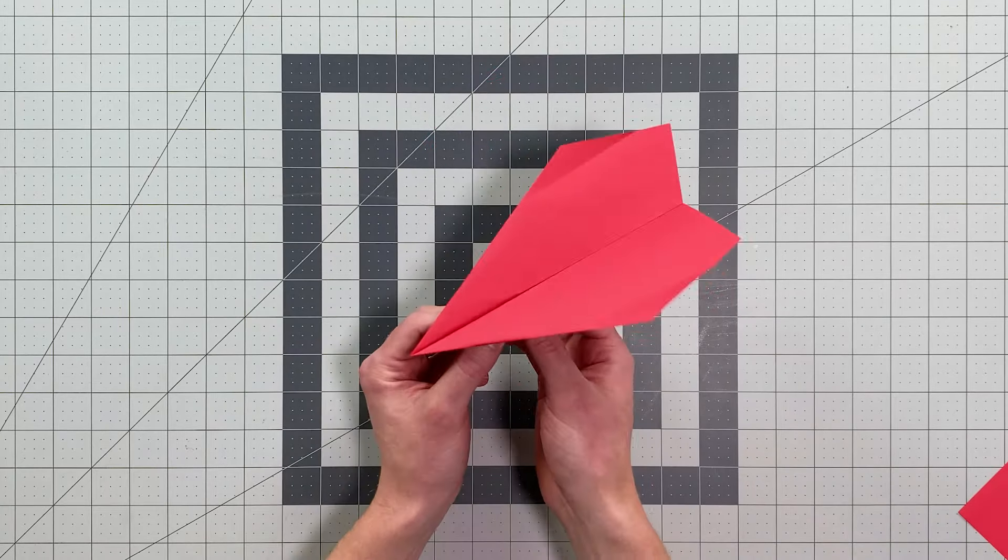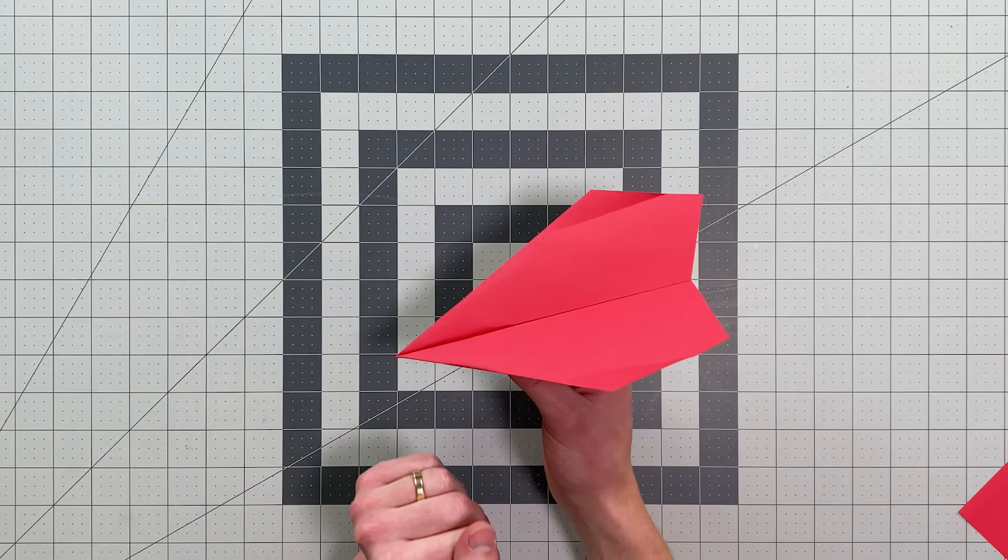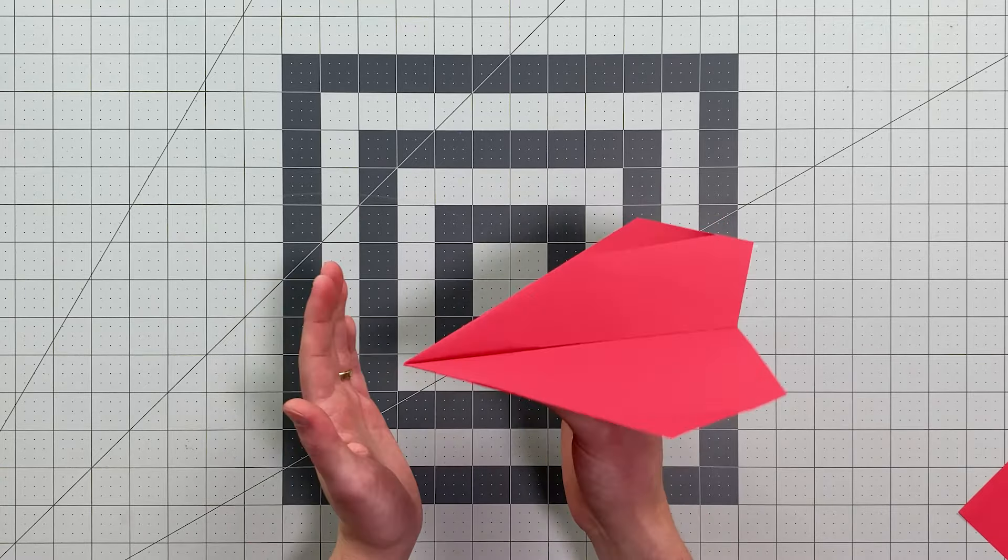In this video, I'm going to teach you how to make Onslaught Alpha, which is an exceptional paper airplane that flies way over 100 feet, and it's really easy to fold.